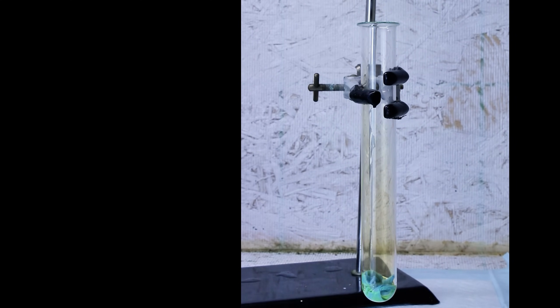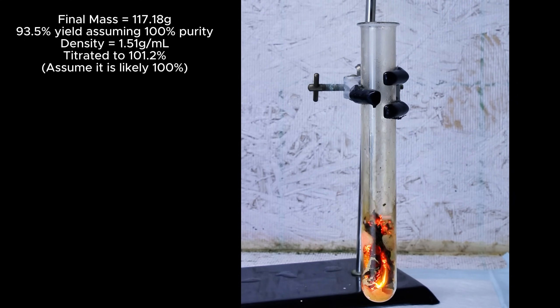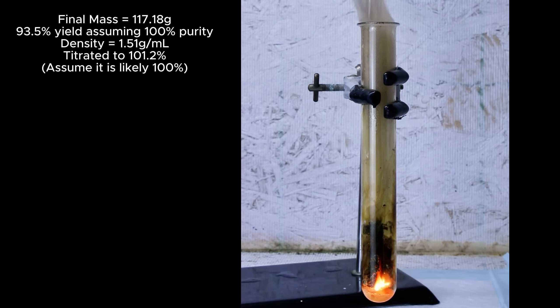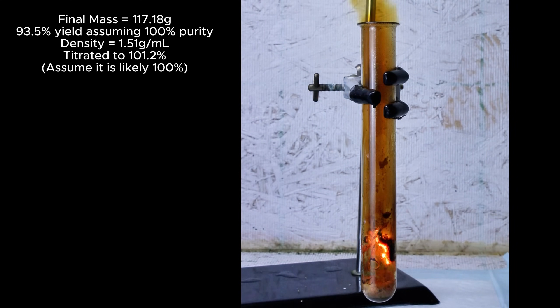Anyway, in the end I got a final mass of 117.78 grams which represents a 93.5% yield, with virtually all of my loss being due to decomposition into nitrogen dioxide. The nitric acid here has a density of 1.51 grams per milliliter and I titrated it to basically 100% if you account for human error.